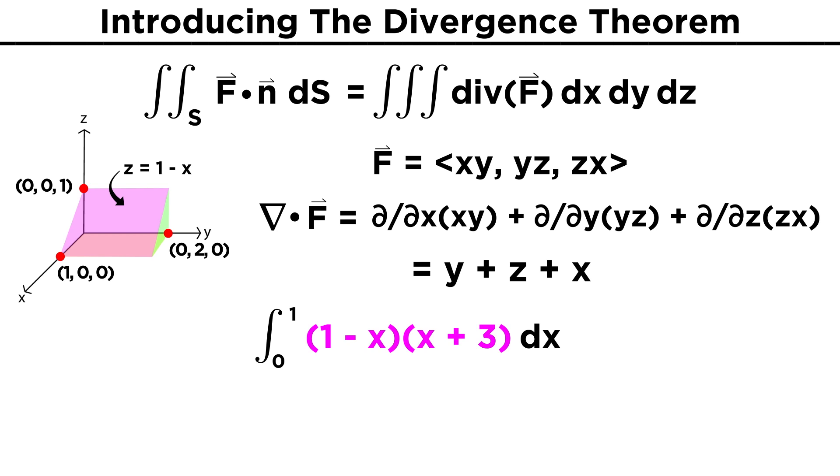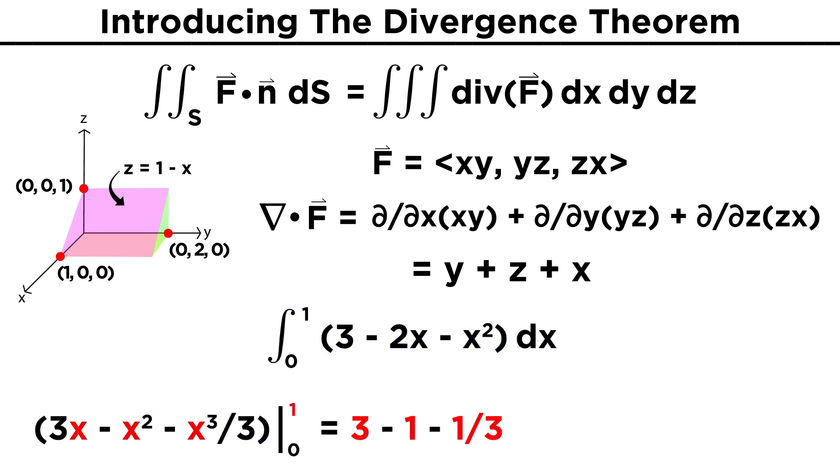Now if we multiply this out, we get the integral of x plus three minus x squared minus three x dx. Simplifying gives us three minus two x minus x squared. Integrating, we get three x minus x squared minus x cubed over three, where x runs from zero to one. And finally, evaluating gives us three minus one minus one third, simplifying to five thirds. This is the value of our surface integral, which we used the divergence theorem to calculate.